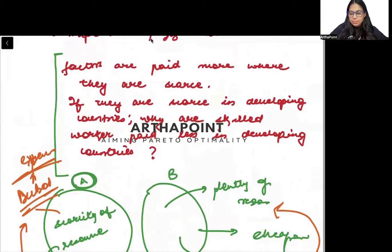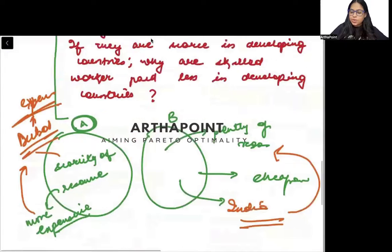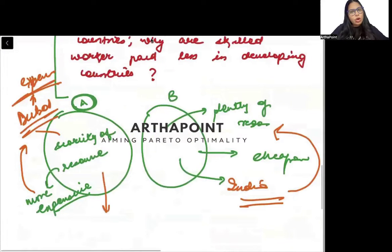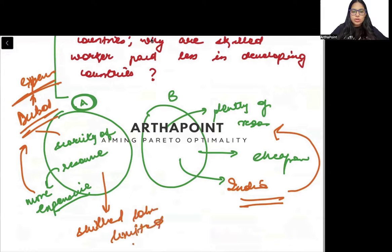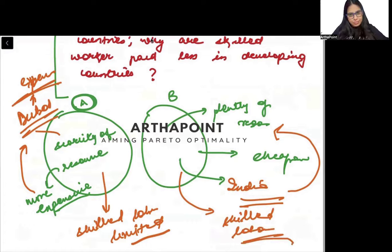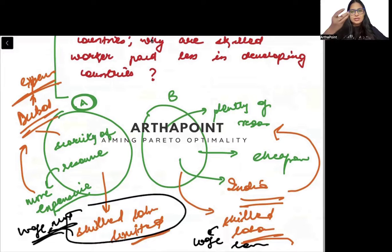Now, if we look at developing countries and developed countries, then developing countries already skilled labor is limited. Not everyone is educated. And developed countries, the skilled labor is skilled. Everyone is educated. Literacy rate is high. So, shouldn't it happen that in developed countries, wage of skilled labor should be less and in developing countries, wage of skilled labor should be more because they are in scarcity.